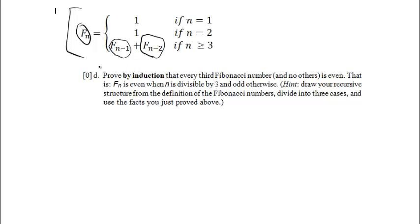Our job is to prove by induction that every third Fibonacci number and no others is even — that is, F sub n is even when n is divisible by 3 and odd otherwise. The problem says to draw a recursive structure from the Fibonacci definition, divide into three cases, and use the previously proven facts: two even numbers add to even, two odd numbers add to even, and an odd plus even gives odd.